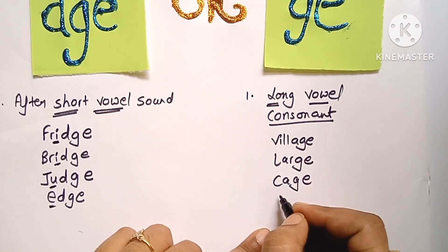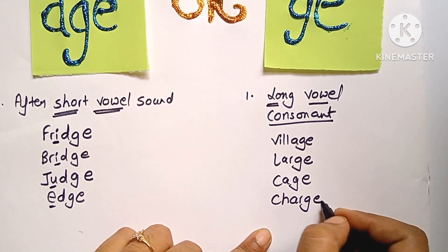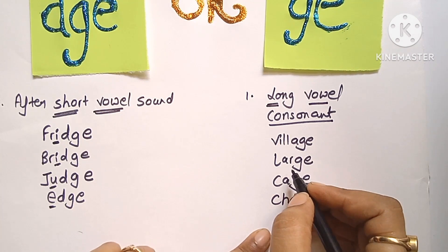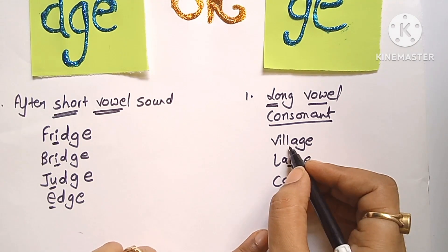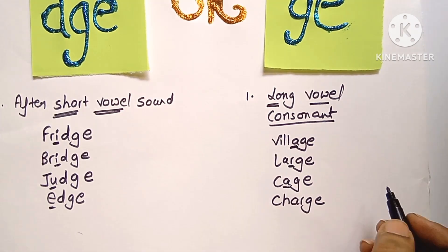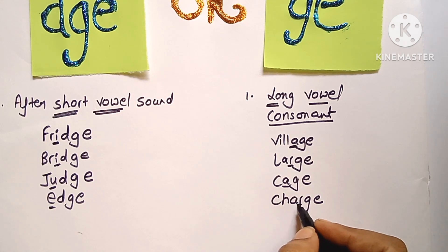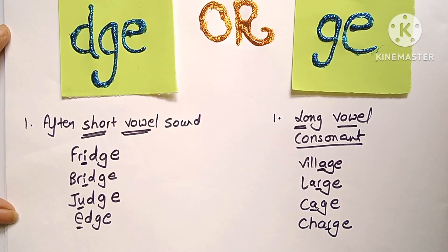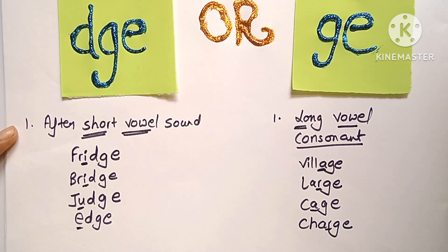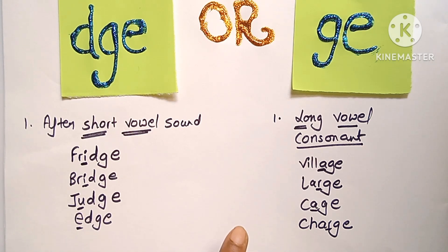Charge. इसमें आप सब में देखेंगे — इसमें vowel की long sound है या फिर consonant है. जैसे यहाँ consonant है, यहाँ vowel है और उसकी long sound है, यहाँ R है तो यह consonant है. So the rule is: D, G, E — trigraph — हम तब use करते हैं जब J sound से पहले short vowel sound हो. G, E — digraph — long vowel के साथ या consonant के साथ use की जाती है.